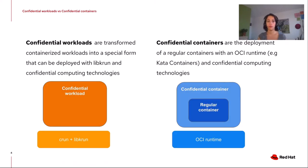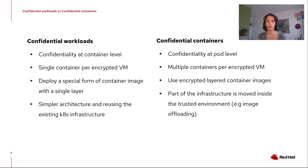It's important to understand the difference between confidential workloads and confidential containers. Confidential workloads are a transformed containerized workload in a special form that can be deployed with libkrun and confidential computing technologies. Confidential containers are the deployment of a regular container with an OCI runtime like Kata containers and confidential computing technologies. Confidential workloads focus at the container level, implying a single container per encrypted virtual machine. Confidential containers, on the other hand, focus at the pod level — a group of containers that Kubernetes deploys as a unit — implying multiple containers per encrypted virtual machine.